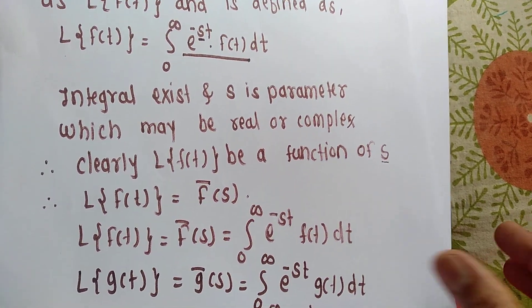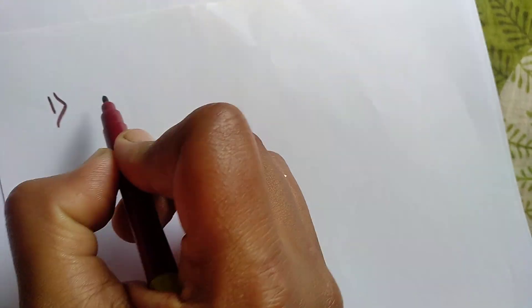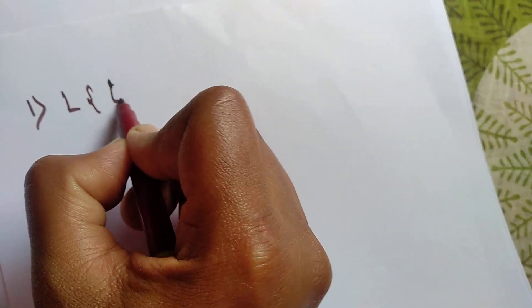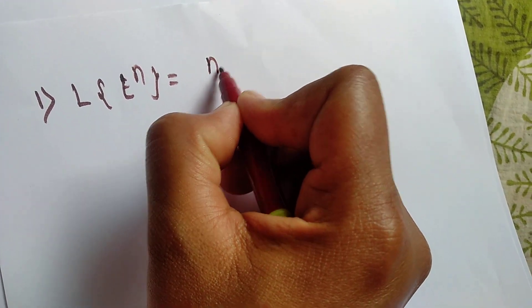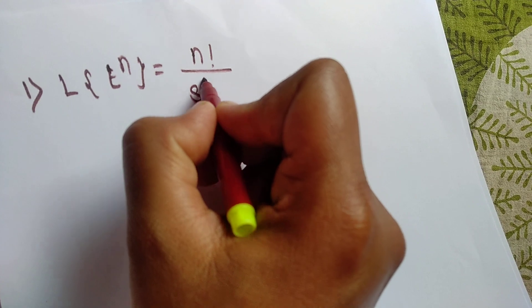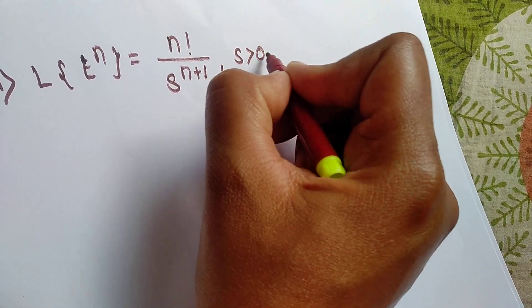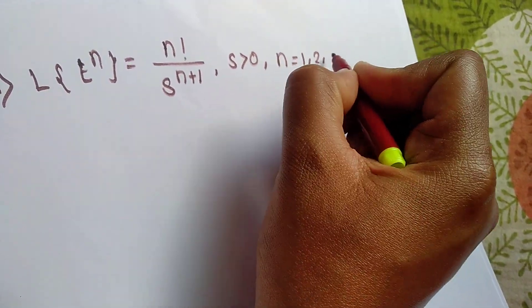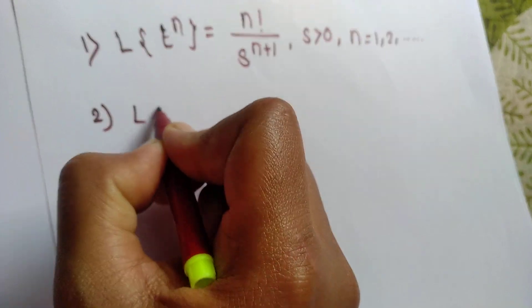Now we will see the Laplace transform of some standard functions. Laplace transform of some standard functions — I will note the formulas. First formula: Laplace of t raised to n equals n factorial divided by s raised to n plus 1, where s is greater than 0 and n equals 1, 2, up to 100.